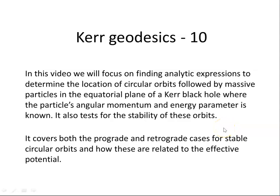In this video we will focus on finding analytic expressions to determine the location of circular orbits followed by massive particles in the equatorial plane of the Kerr black hole, where the particle's angular momentum and energy parameter is known. It also tests for the stability of these orbits, covering both the prograde and retrograde cases for stable circular orbits and how these are related to the effective potential.